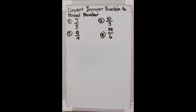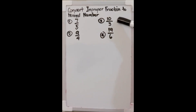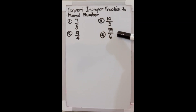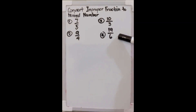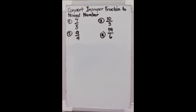Hello viewers. In this video, we're going to convert improper fractions to mixed numbers and vice versa. The first four examples here are all improper fractions, where the numerators are bigger than their denominators. So we'll be converting them into mixed numbers.